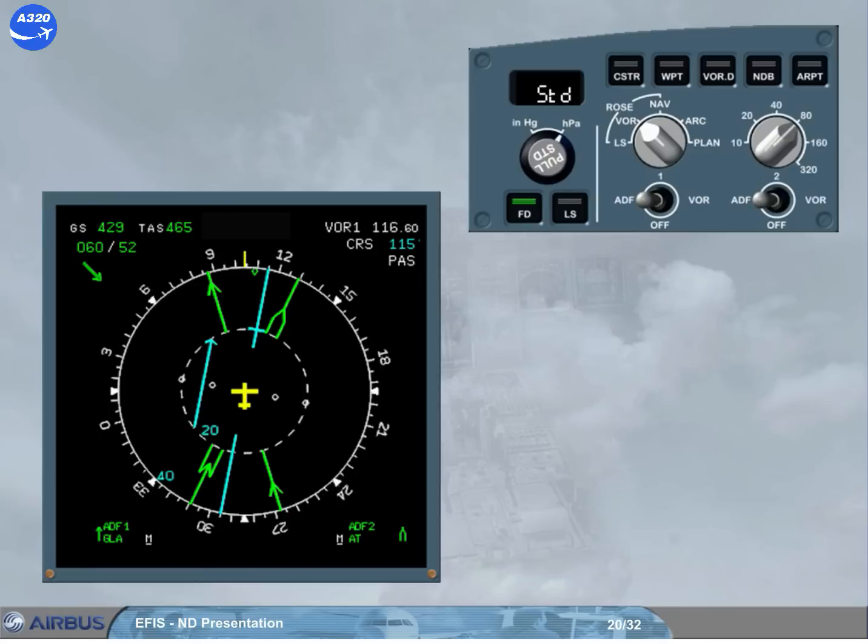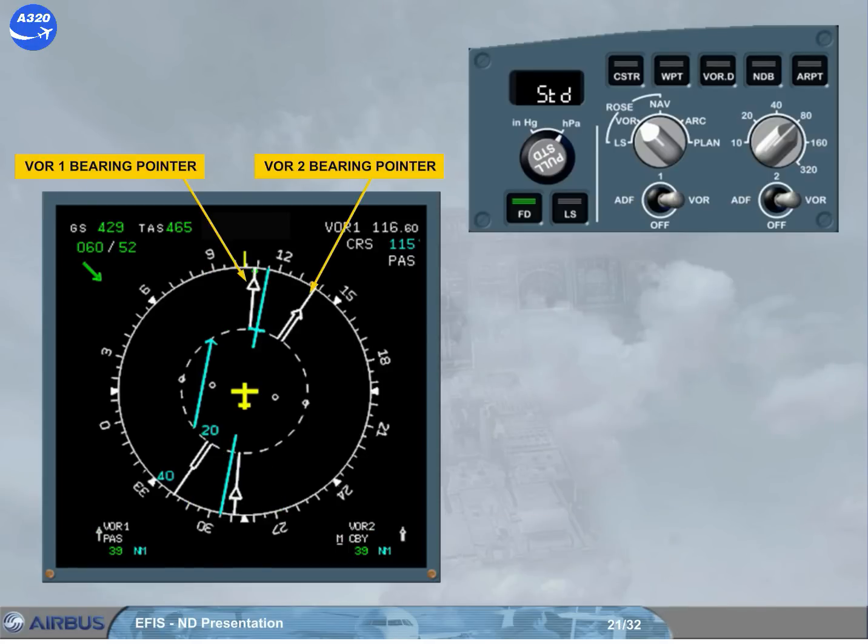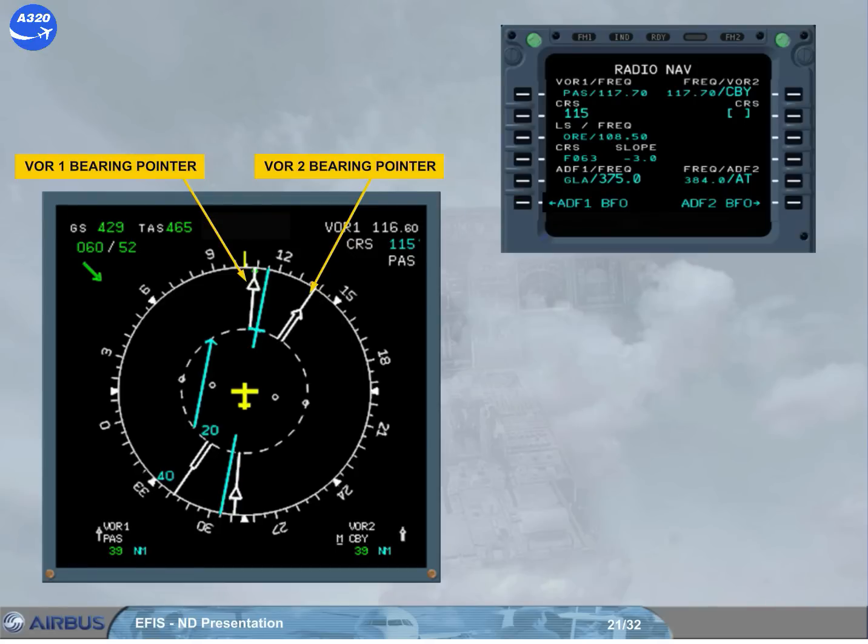To see the effect of the ADF VOR selectors, click on the forward arrow to select both VOR bearing pointers on. The two white VOR bearing pointers are now visible. As you can see on the RadNav page, the VOR1 is auto-tuned with its course manually entered, and the VOR2 is manually tuned. You have seen the two raw data displays.